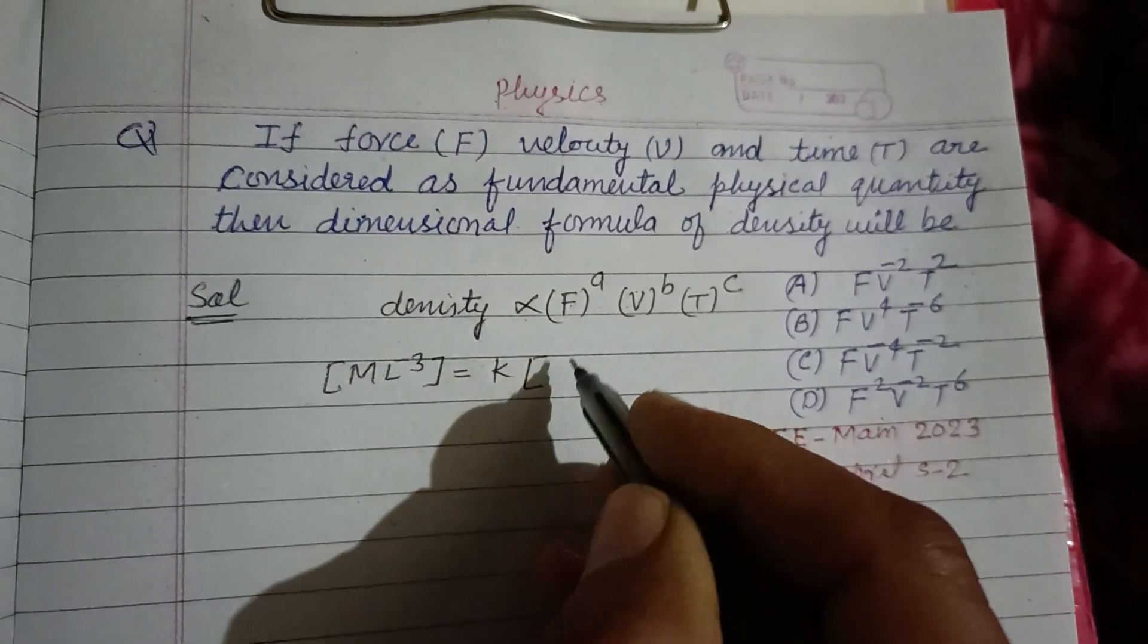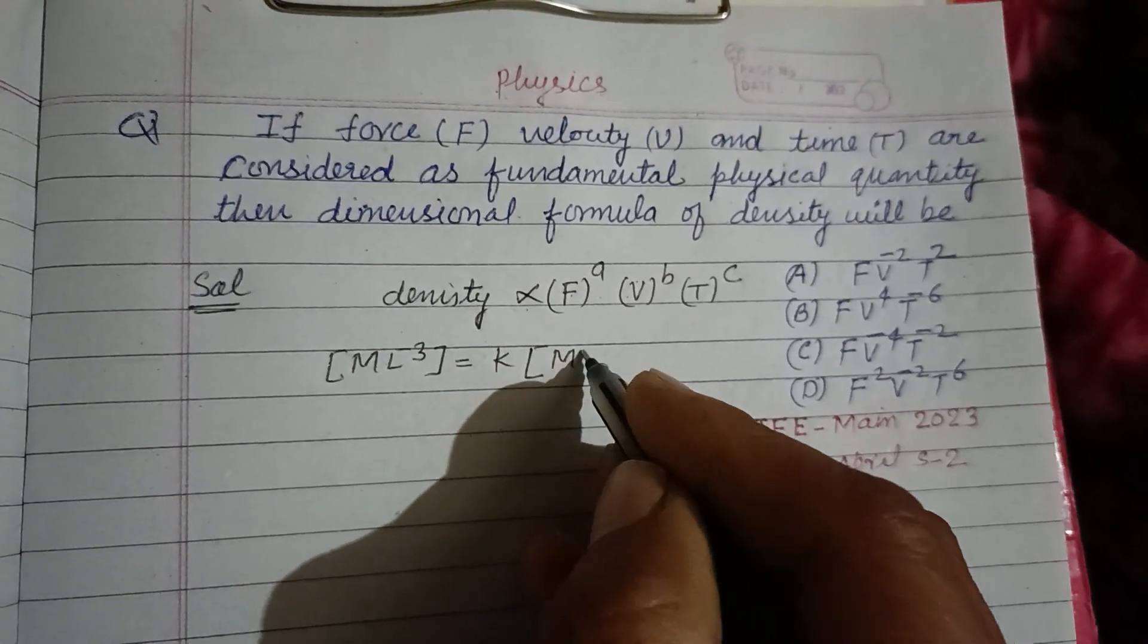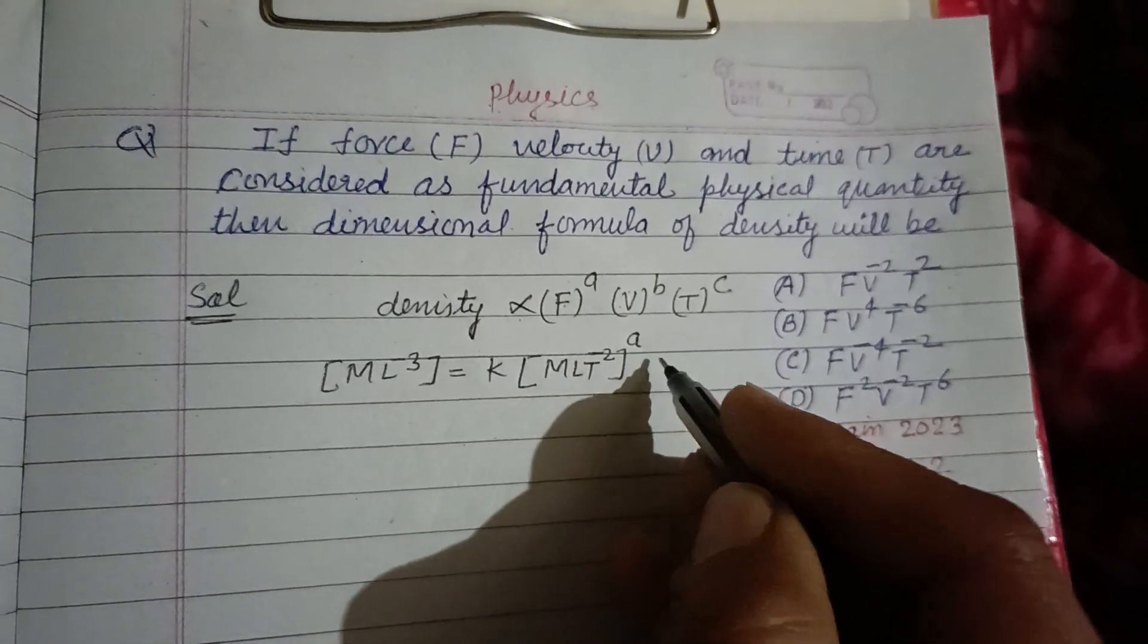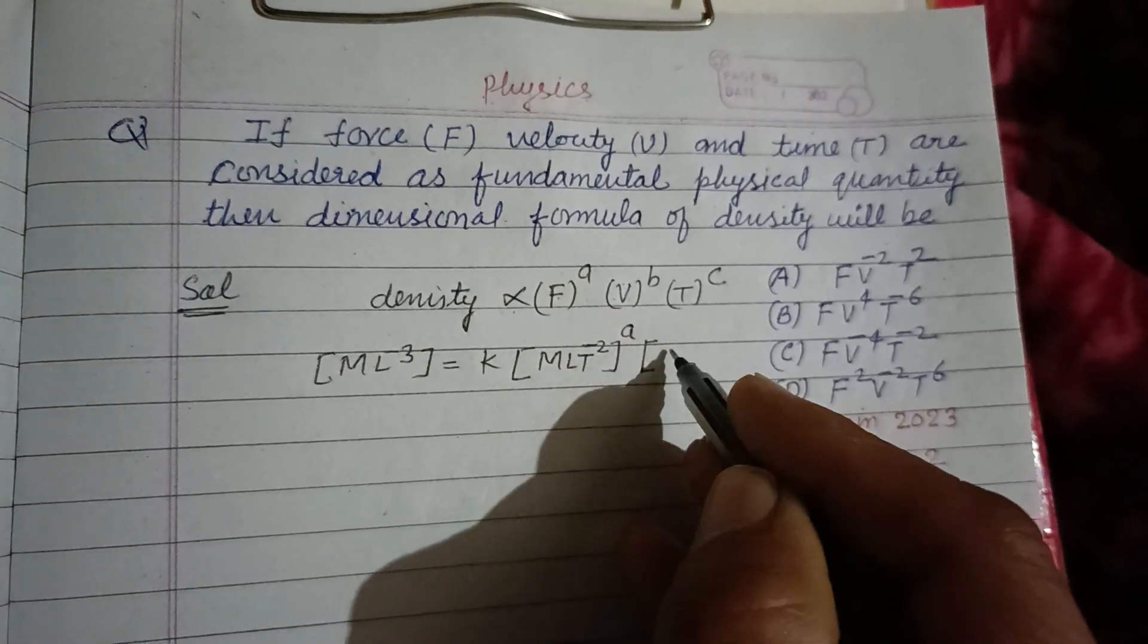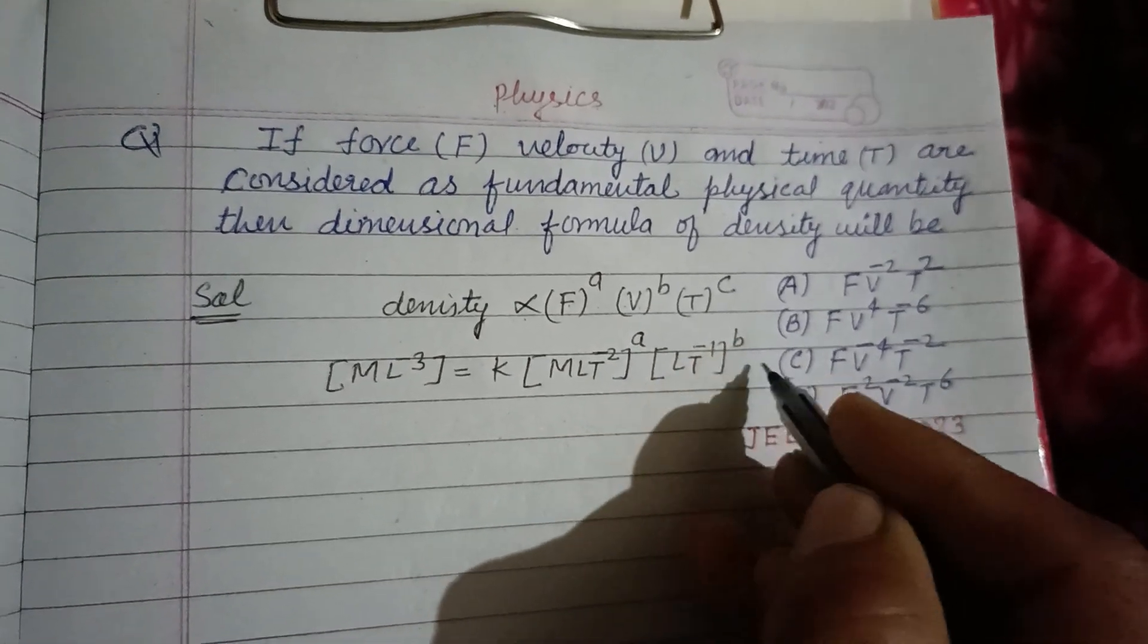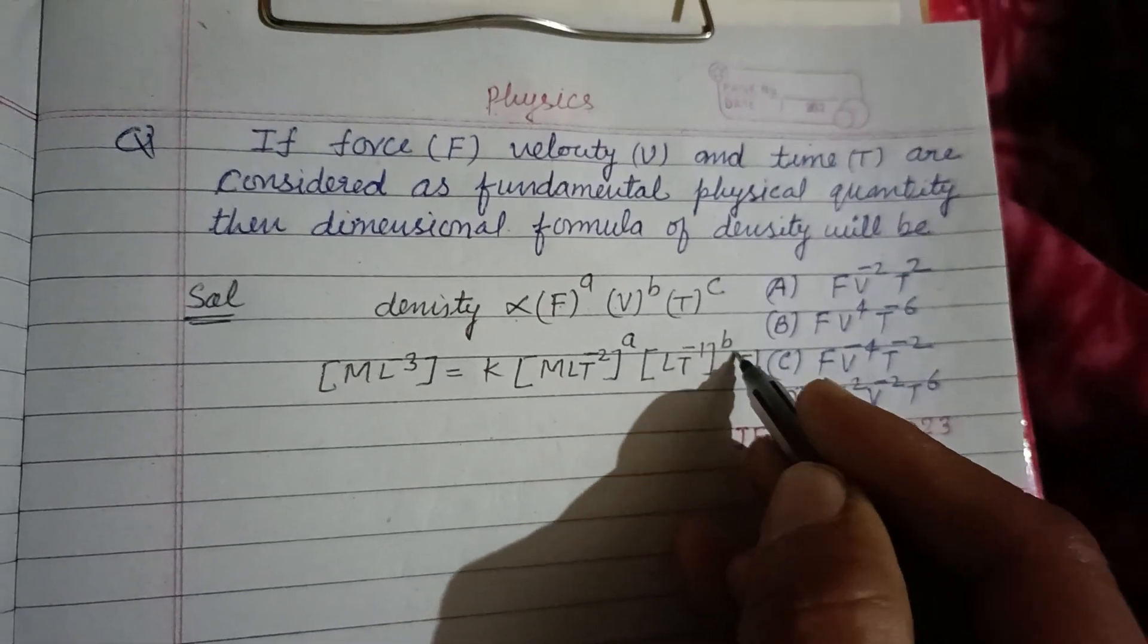Here dimension of force is you know that MLT^-2 to the power A, and dimension of velocity is LT^-1 to the power B, and dimension of time is T to the power C.